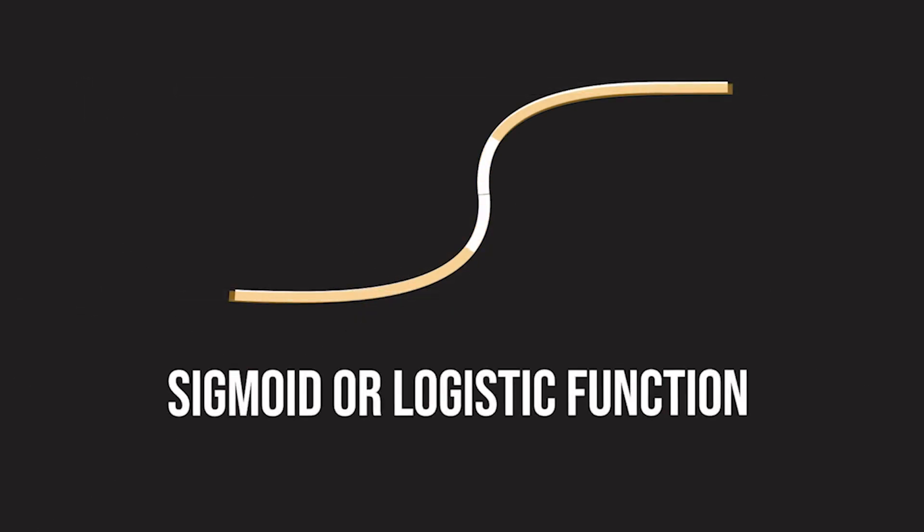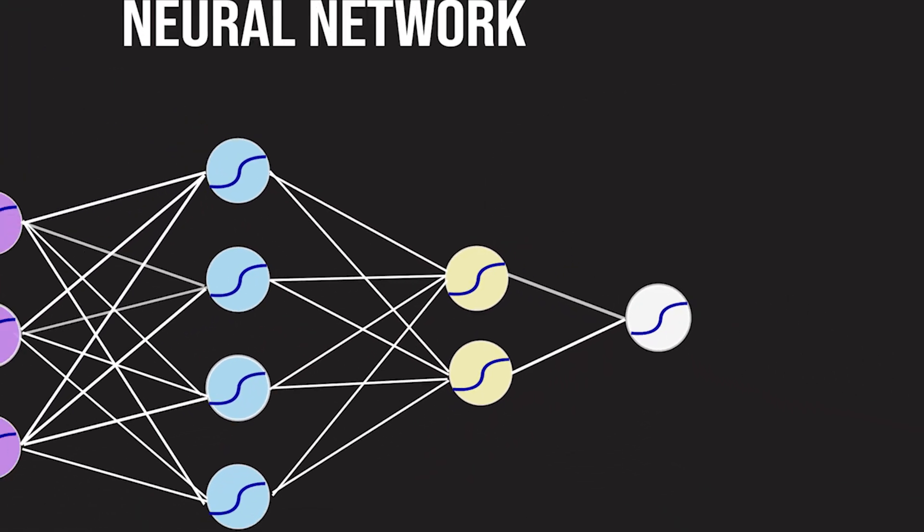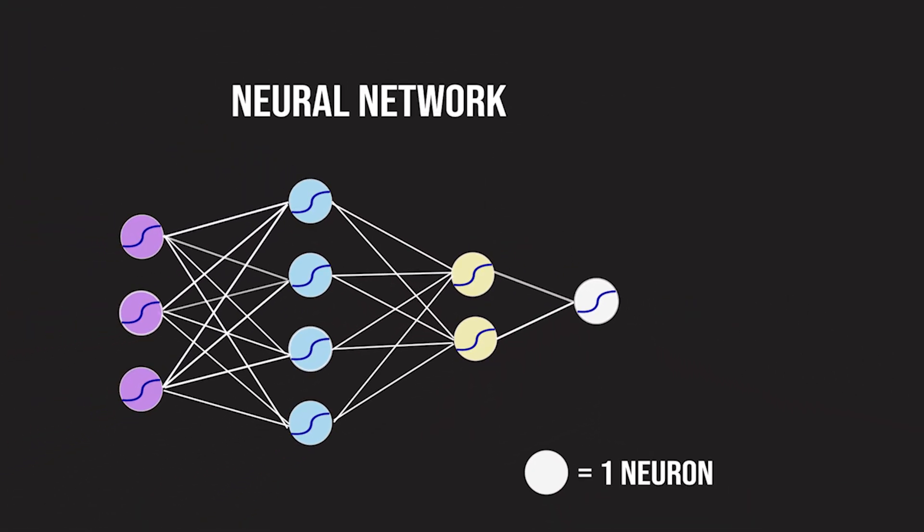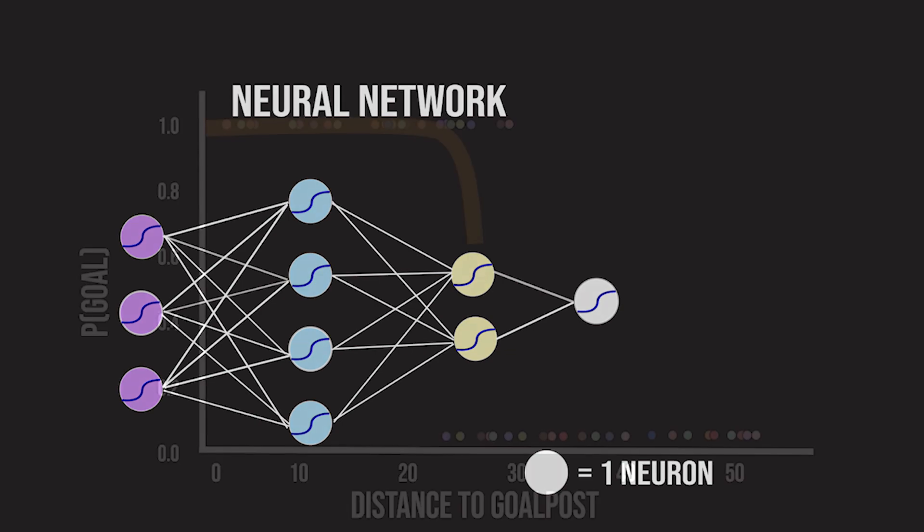So essentially, a neural network is a sequential arrangement of logistic regression functions, or neurons, whose outputs are then fed as inputs to other neurons. We'll see how this arrangement of simple functions is capable of representing complex functions.